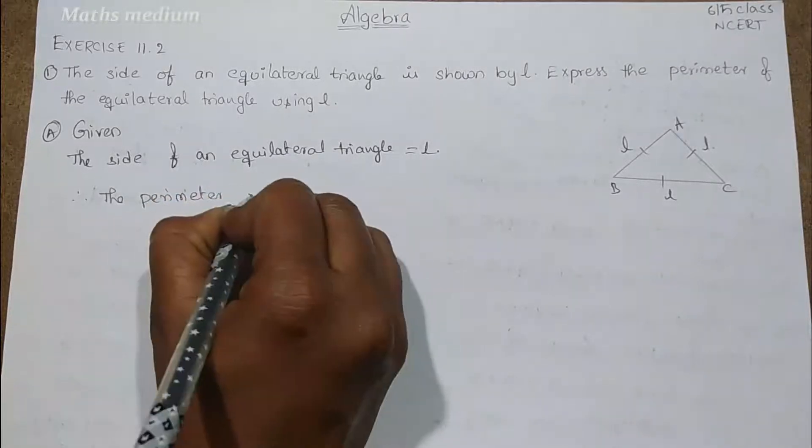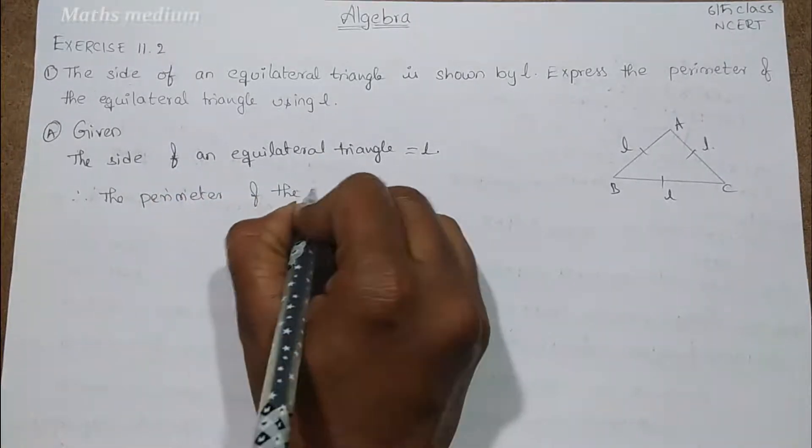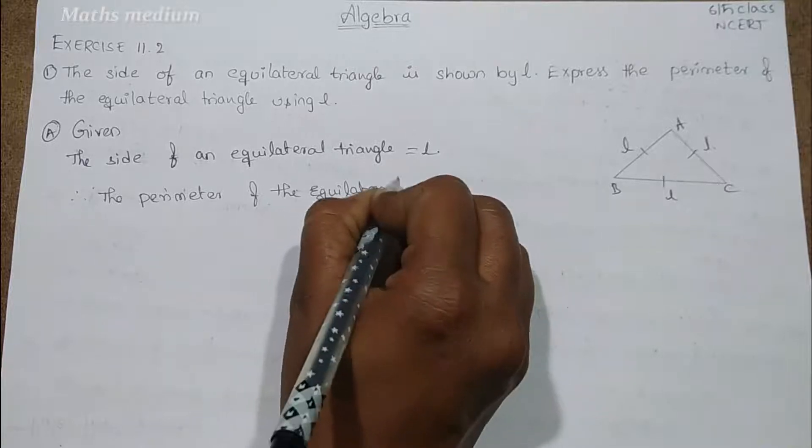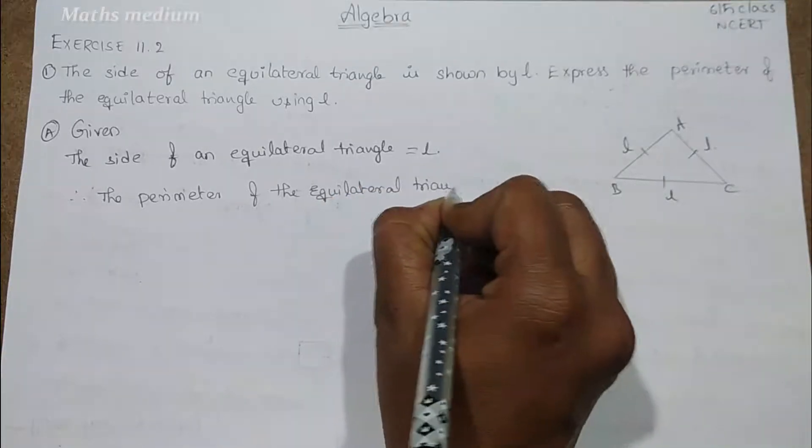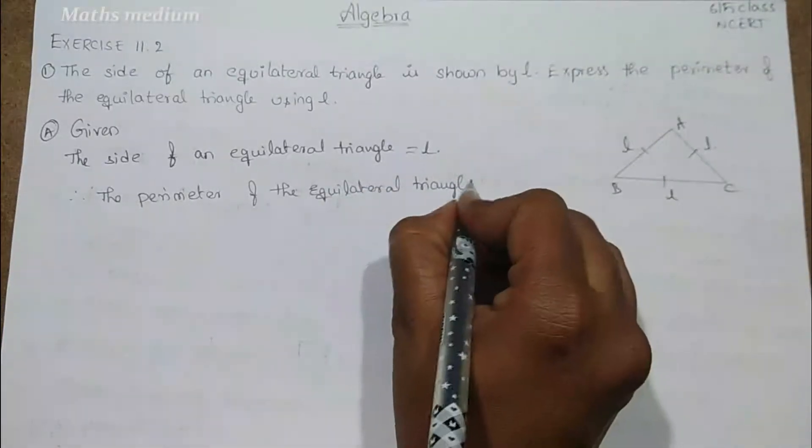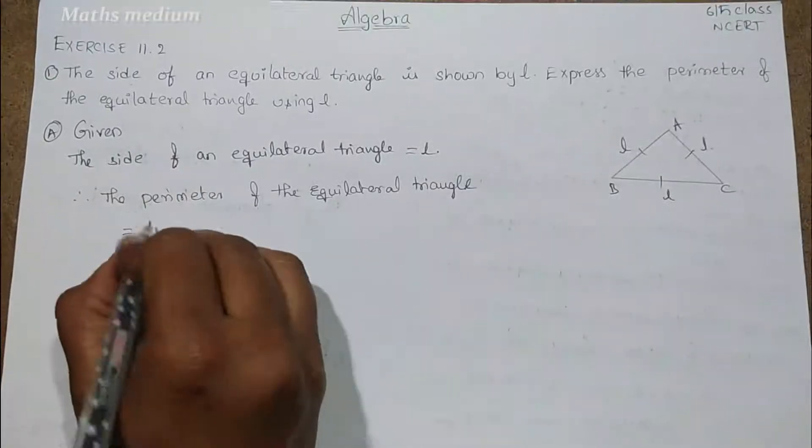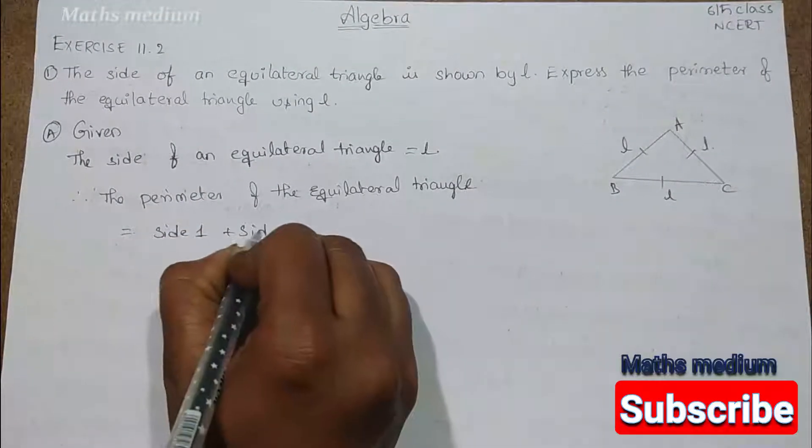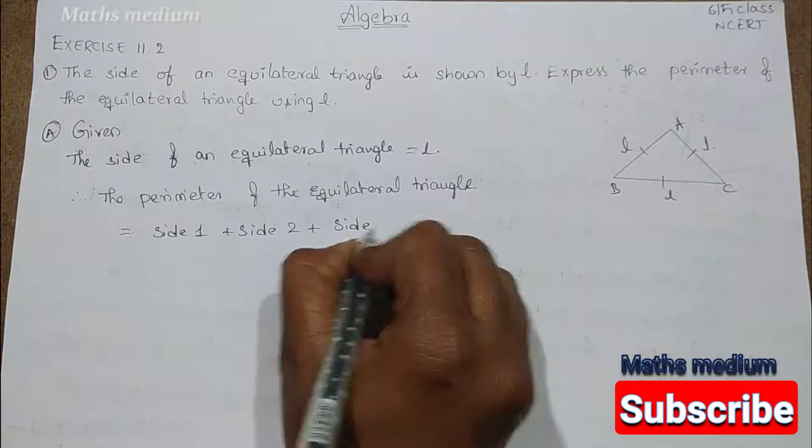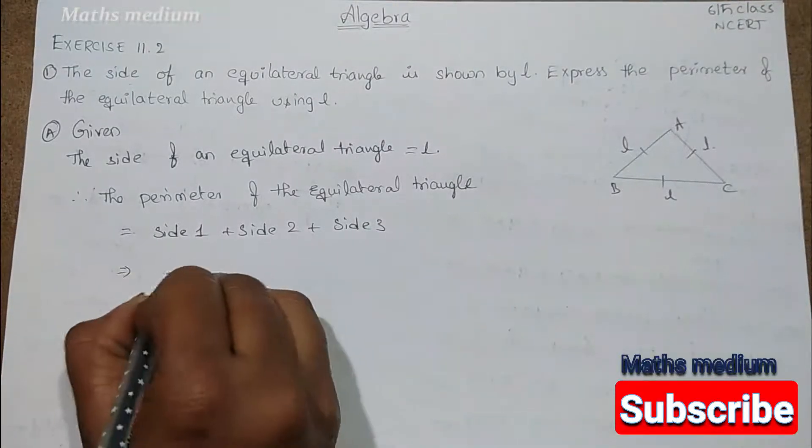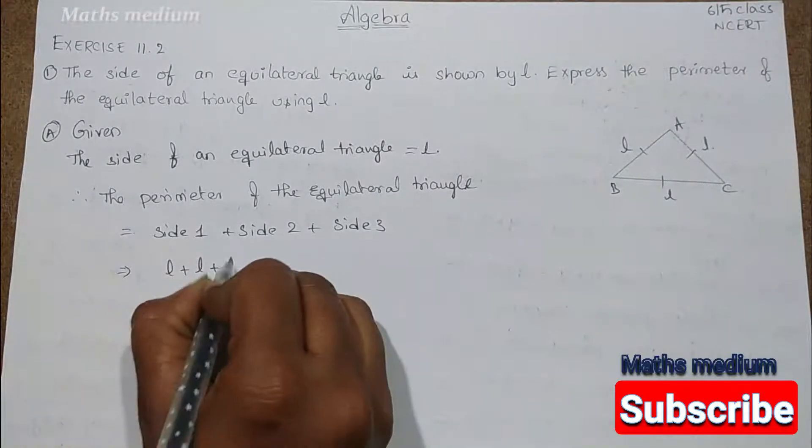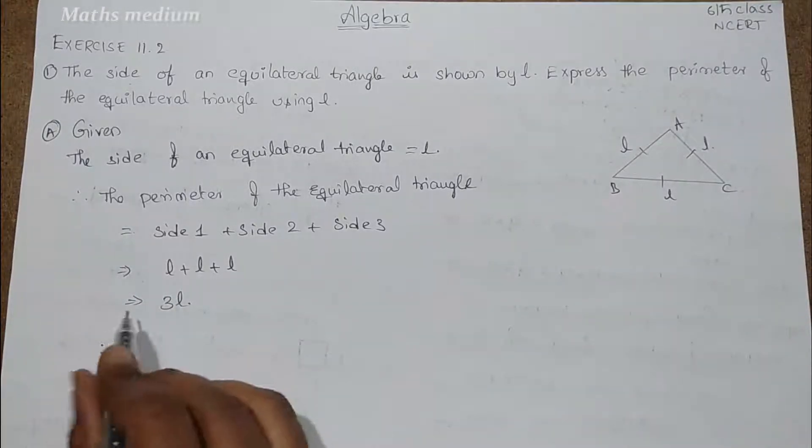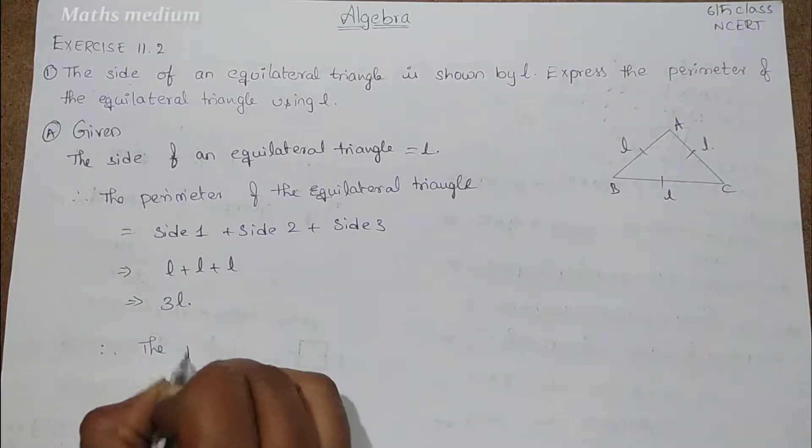So that is L plus L plus L, that is equal to 3L. Therefore, the perimeter of the equilateral triangle is equal to 3L.